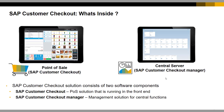SAP Customer Checkout has two software components. The first software component is called SAP Customer Checkout. It is the point-of-sale solution installed in the POS terminal where your business transactions take place. It is also the software component where all the hardware devices — like printers, cash drawers, line display, customer display, barcode scanner, and credit card terminal — are integrated.